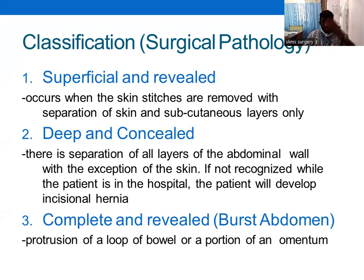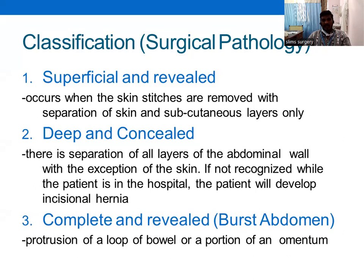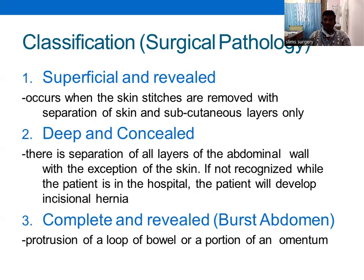The classification of surgical wound dehiscence is: superficial and revealed — skin sutures are removed with separation of skin and subcutaneous layer only; deep and concealed — separation of the abdominal wall layers with the exception of skin; if not recognised, the patient will develop an incisional hernia as the rectus sheath opens while skin remains intact. Complete and revealed means the wound is open from skin down to peritoneum.